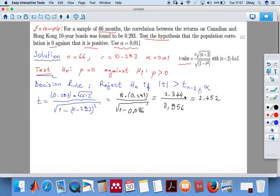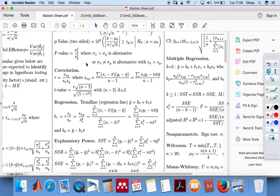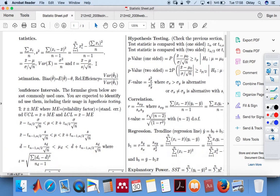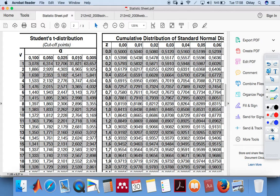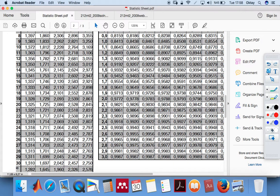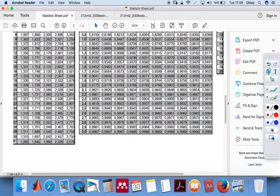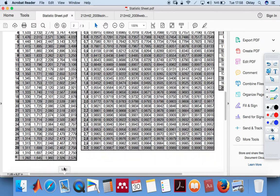Now we need t n minus 2, alpha. What is that? Let's calculate it. T with n minus 2, so if n is 66, this is 64, with alpha 0.01. This is approximately - let me remember from our formula sheet how this is shown. Let me open that. It was here somewhere. Yes, 0.01, the last row here, which gives us 2.326.